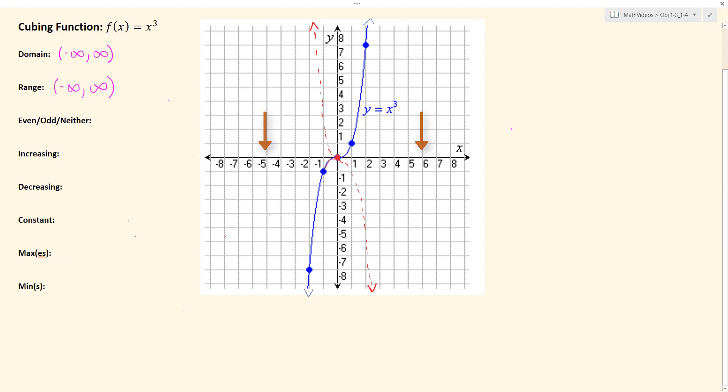we'll see that we actually overlap our original function. And so that is by definition what it means to be odd. And so f(x) equals x cubed is an odd function. So that's one way to look at it.